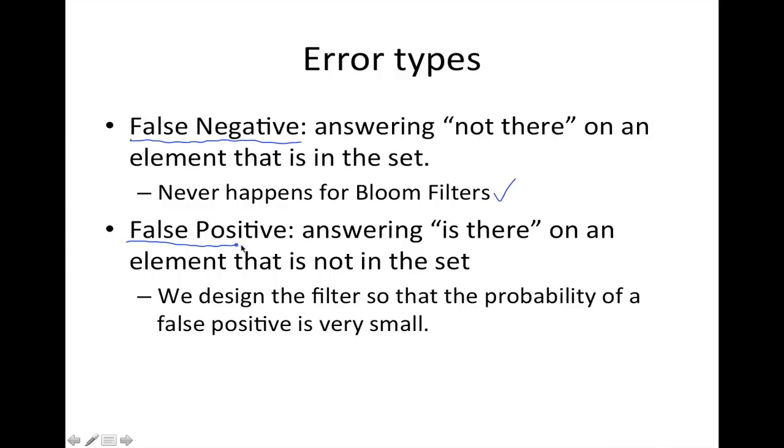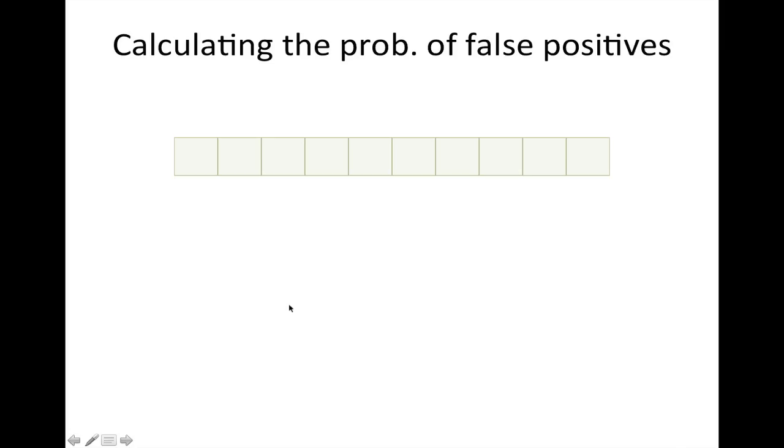False positive is the other type of error, where we say that something is there when in fact it's not there. And that can happen. Let's see how that happens. So here is an example.